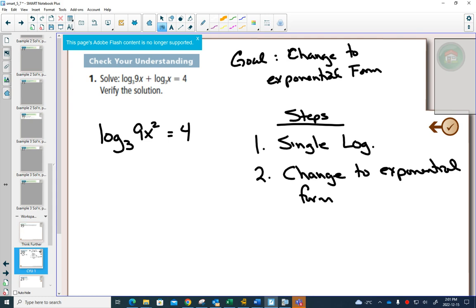So, step 1, if you can change it to a single logarithm, then you can do your goal. The main goal is to change to exponential form. Well, I have a logarithm. I know that the base is 3, the exponent is 4, and the answer is 9x squared.